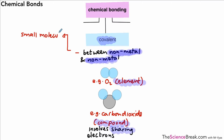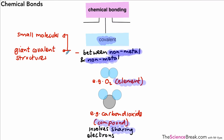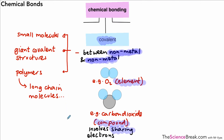The first type is what we call simple or small molecules. The second is our giant covalent structures — examples of those would be diamond and silicon dioxide, and we will have a separate video on that. The third type is what we call polymers, which are long chain molecules. One of the ones we'll be studying is DNA, which is a long chain molecule, but there are lots of others which we'll look at in a separate video. For today's video we're going to focus on the small or simple molecules.